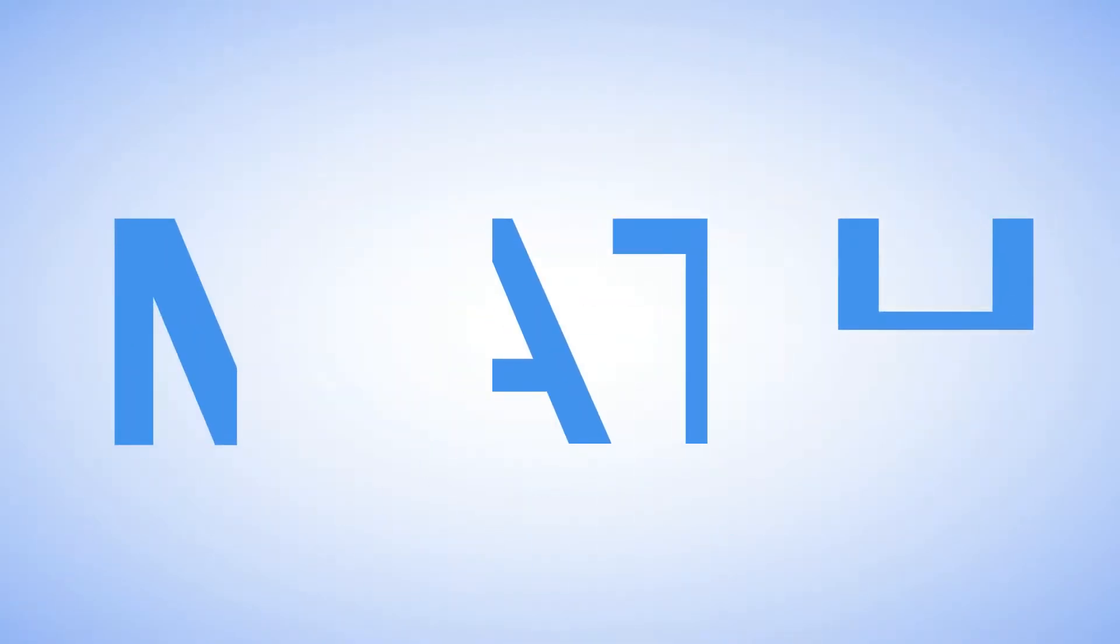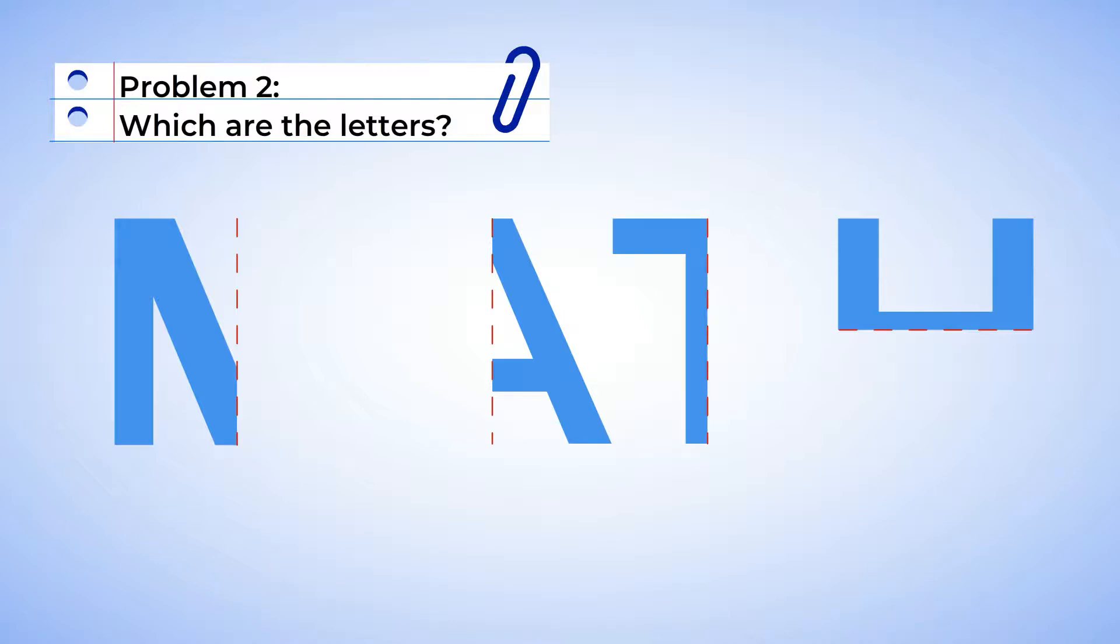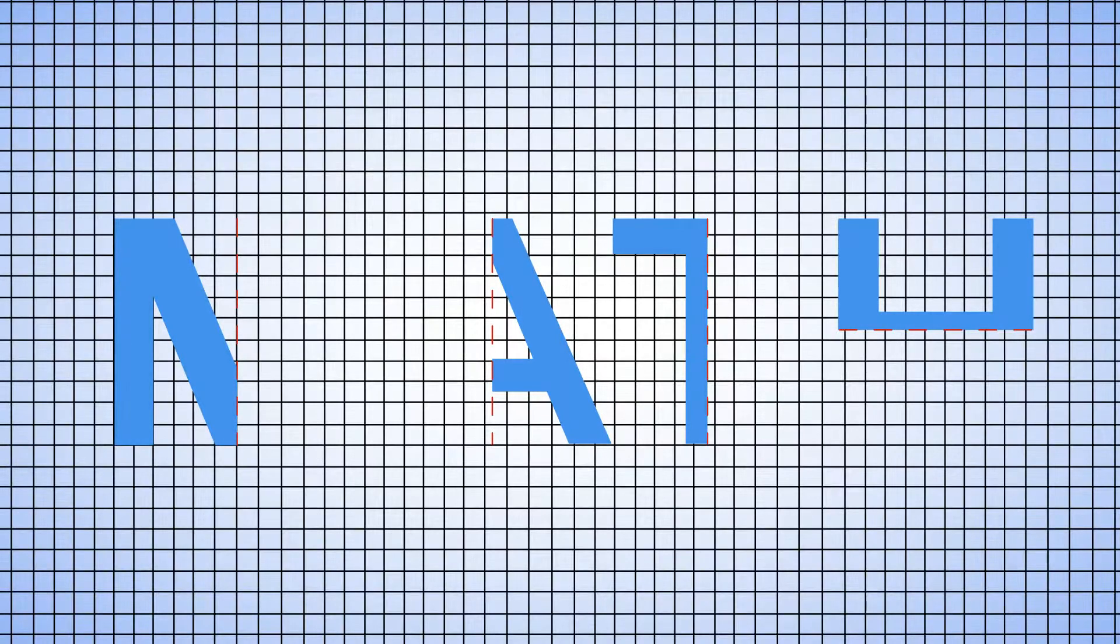Look at these shapes. They're actually letters. And we have to use the line of symmetry to reveal the full letter. Let's see what letters we'll discover. Let's start with the first image.